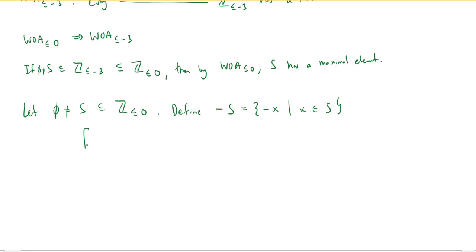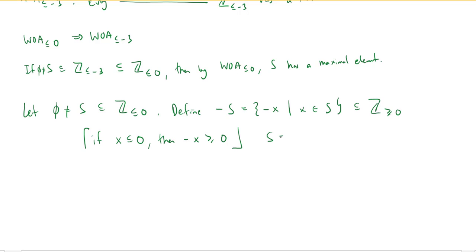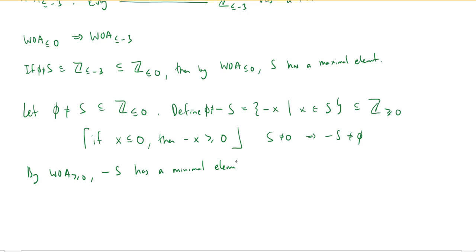If x ≤ 0, then -x ≥ 0, so all of these -x values are non-negative numbers, making -S a subset of Z ≥ 0. Also, because S is non-empty, -S is non-empty: if I have some x in S, then -x is in -S. So -S is a non-empty subset of Z ≥ 0, and by WOA ≥ 0 — which we are assuming holds — -S has a minimal element. Let's call it m.